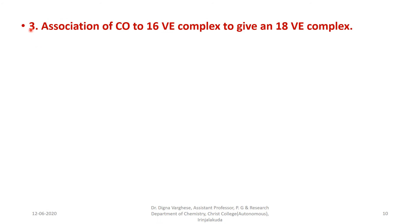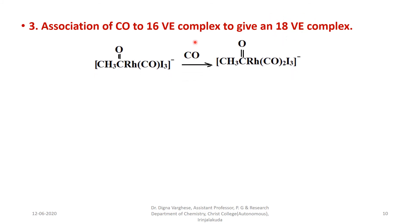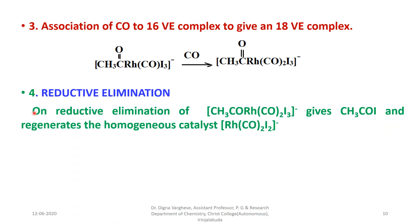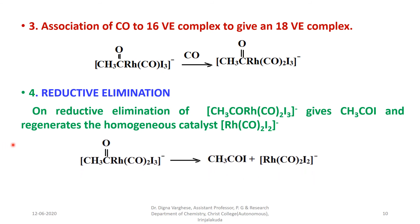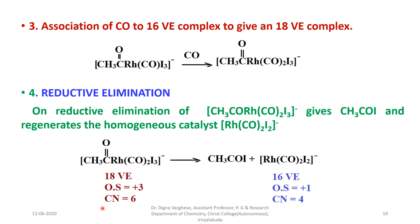In the third step, CO associates with the coordinatively unsaturated complex to give a stable 18-valence-electron complex — that is, addition of CO to give CH₃CO–Rh(CO)₂I₃⁻. The fourth step is reductive elimination, the product-forming step. On reductive elimination, CH₃CO–Rh(CO)₂I₃⁻ gives an acyl iodide and regenerates the homogeneous catalyst. After reductive elimination, the coordination number, oxidation state, and electron count decrease by 2 units — this is the opposite of oxidative addition.